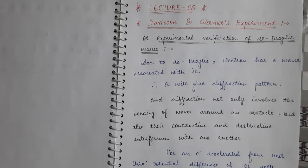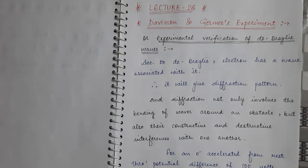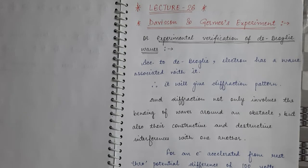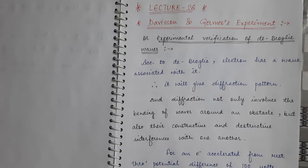According to de Broglie, an electron when it is in motion has a wave associated with it. And if it has a wave associated with it, then it will give a diffraction pattern, because every wave has its diffraction pattern. Diffraction is not only the bending of light around an obstacle, but it is also the constructive and destructive interference with one another.